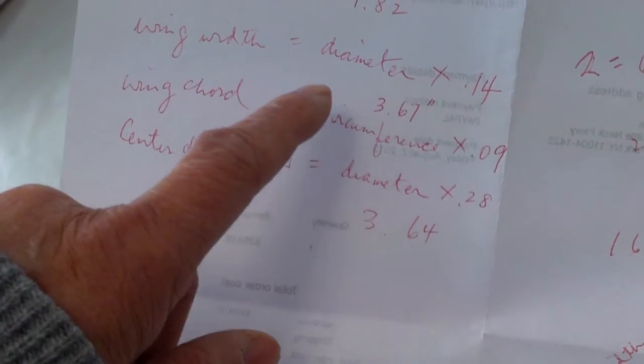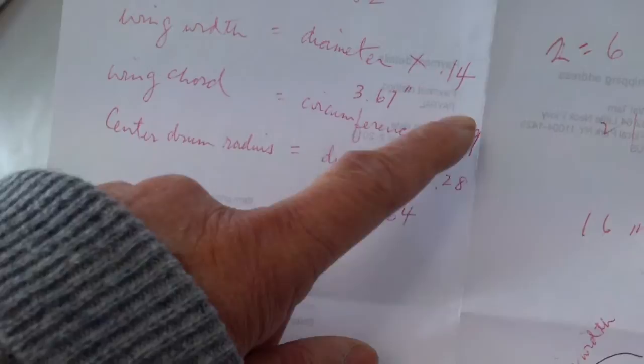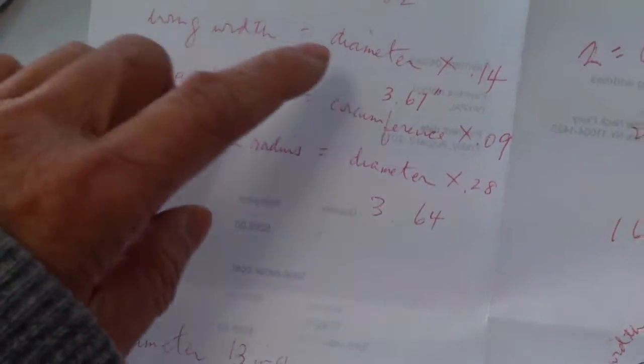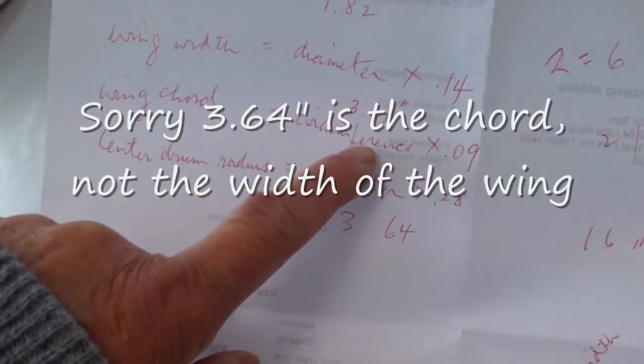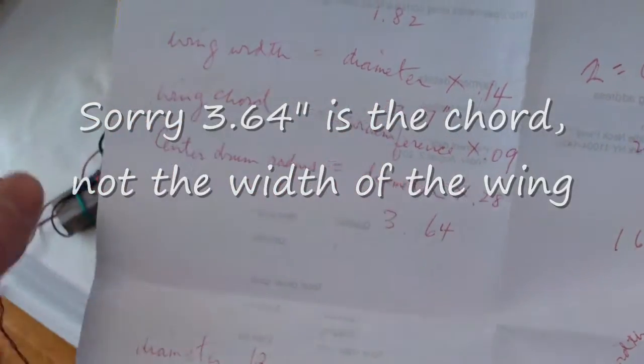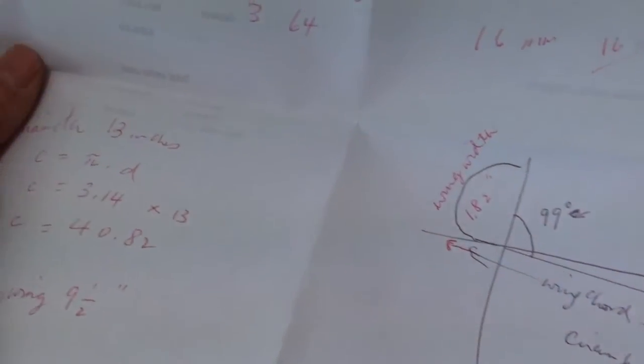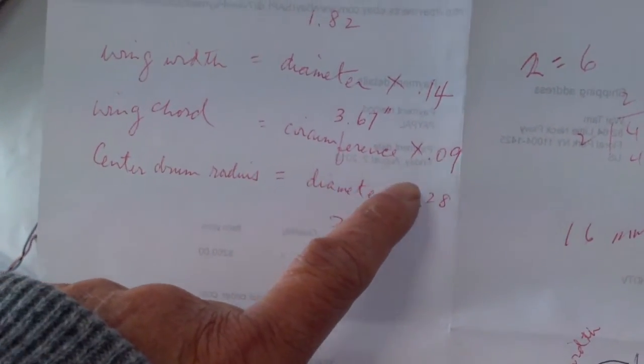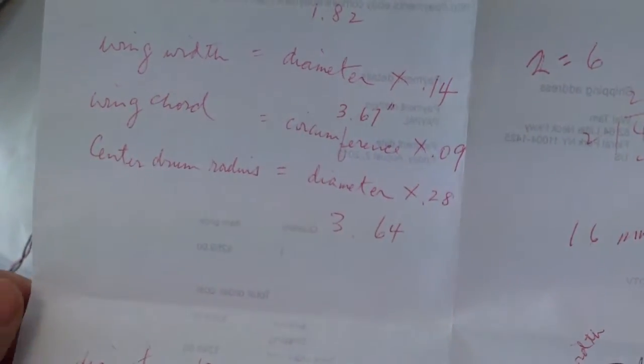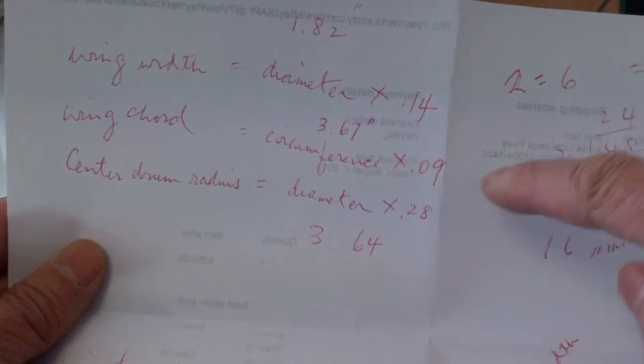The information I got: the width would be 1.82 inches, and there's a formula for that—diameter times 0.14. So my diameter is about 13 inches, times 0.14, and that gives you 3.67 inches. The wing cord is like the width of the wing here, and that would be circumference times 0.09.